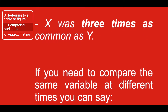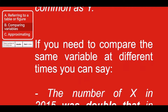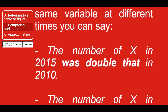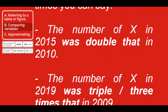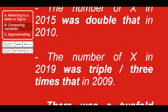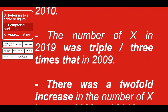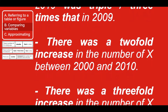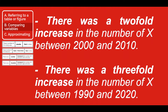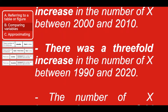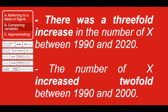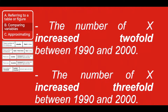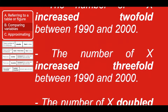If you need to compare the same variable at different times, you can say: 'The number of x in 2015 was double that in 2010.' 'The number of x in 2019 was triple — three times — that in 2009.' 'There was a two-fold increase in the number of x between 2000 and 2010.' 'There was a three-fold increase in the number of x between 1990 and 2020.' 'The number of x increased two-fold between 1990 and 2000.' 'The number of x increased three-fold between 1990 and 2000.'